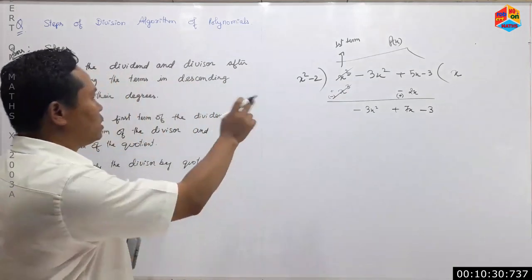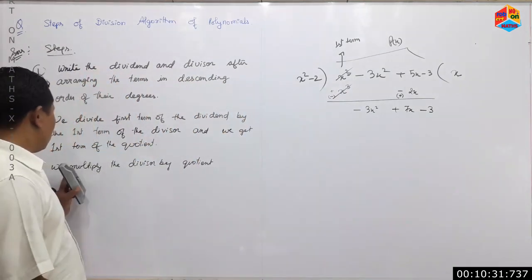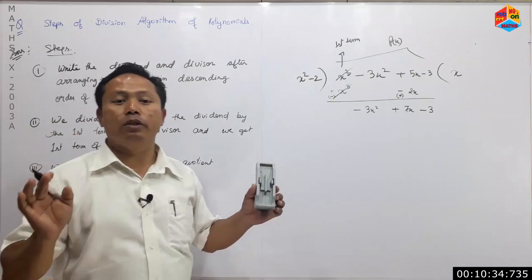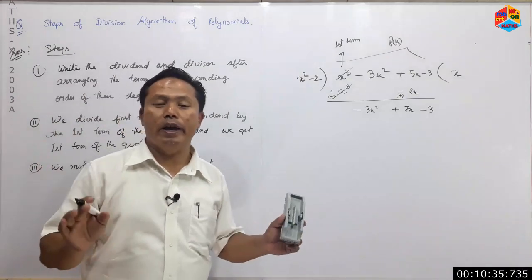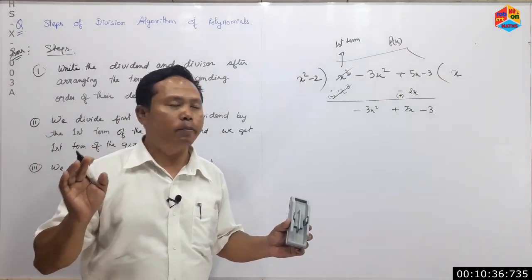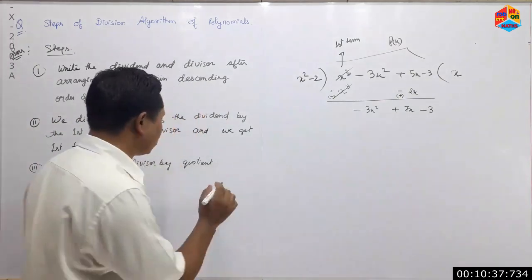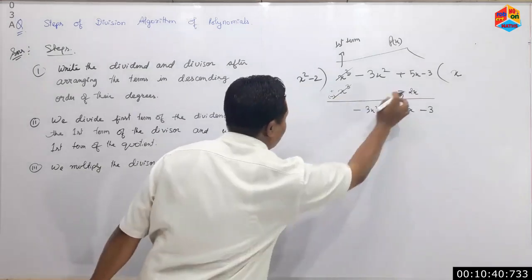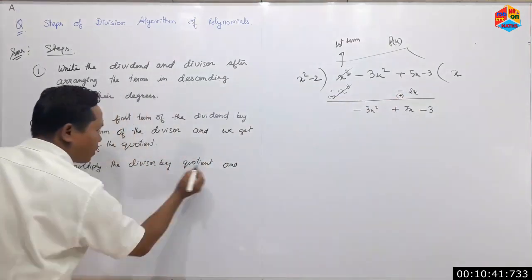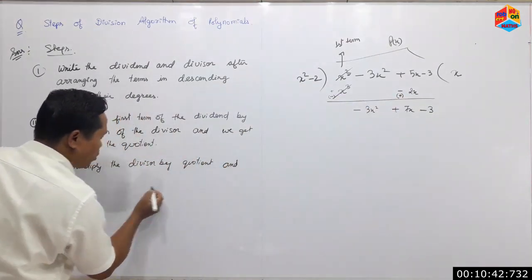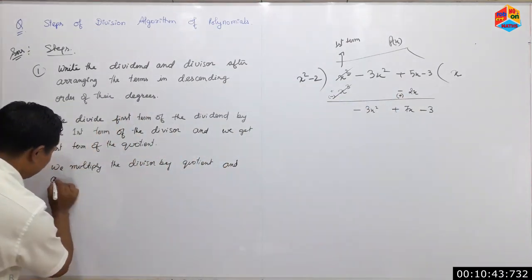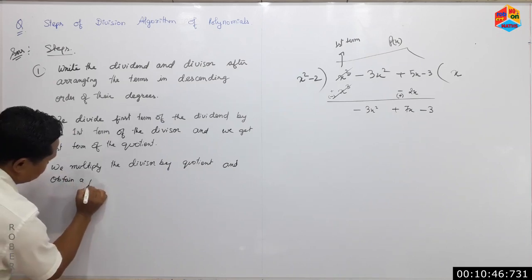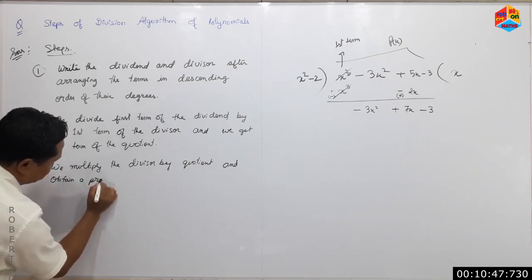We multiply the divisor by the quotient and obtain a product. We subtract this product from the dividend to get the new remainder.